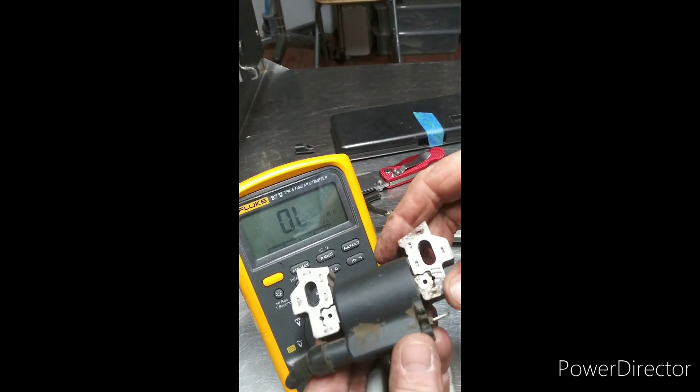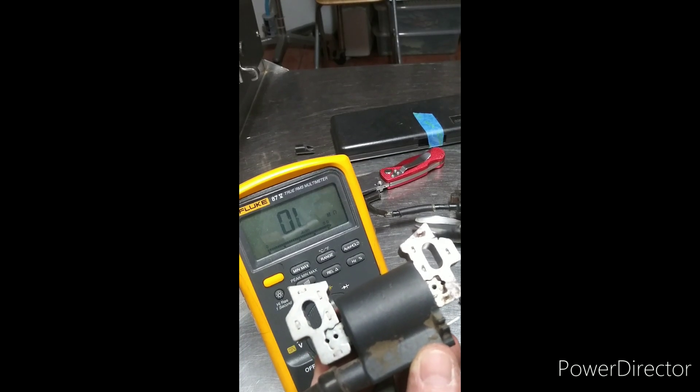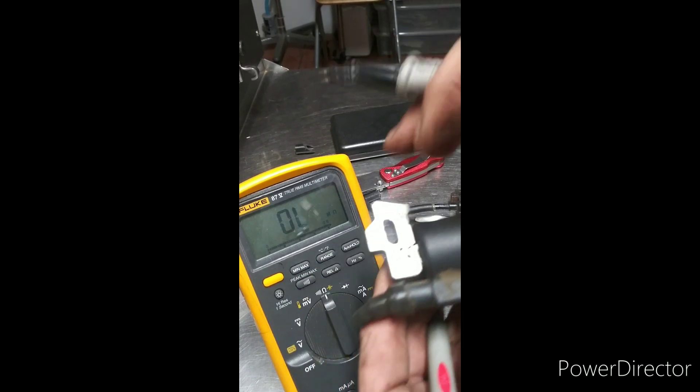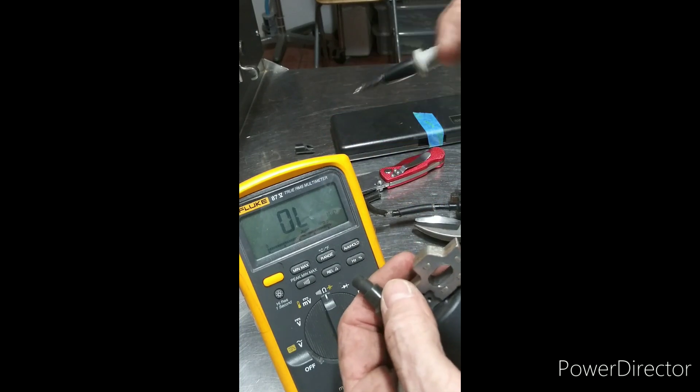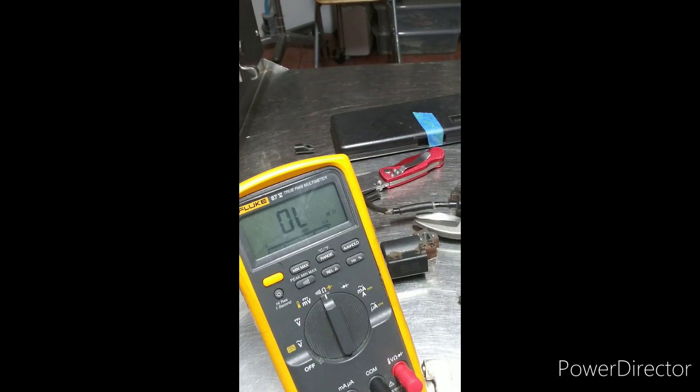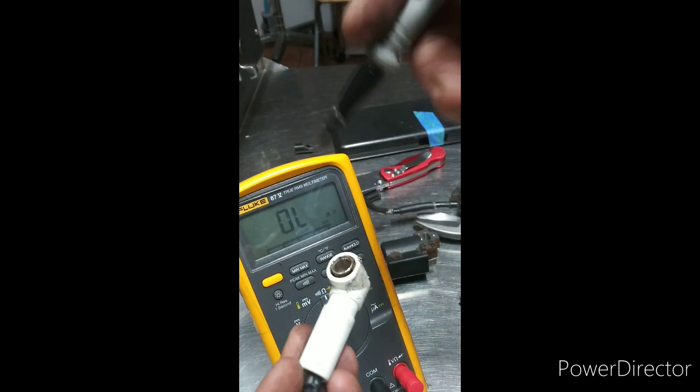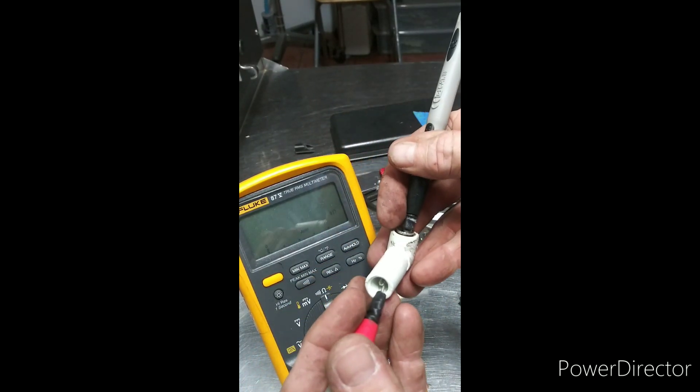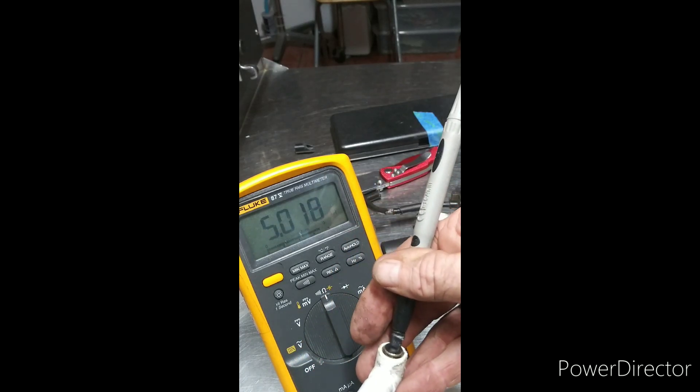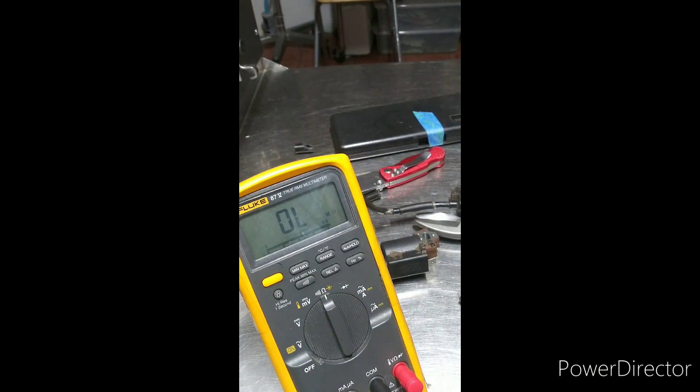This coil right here was reading 11 kiloohms between the ground and the plug where the spark plug goes. I found out that five of those 11 kiloohms came from this bad connector right here, so that would bring it down to six kiloohms.